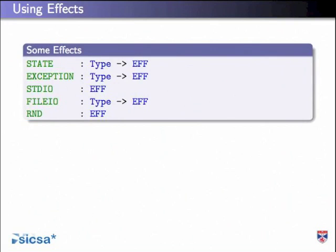Here are some example effects - the kind of things you might commonly see. State is an effect parameterized over the type of thing you're carrying. Exceptions are effects parameterized over the exception type. Input and output is an effect - this standard IO effect gives you writing and reading characters. We might be able to separate different kinds of IO, which is awkward in Haskell - you might want to say you're only allowed to do console IO, not network or CGI effects. File IO is another kind of effect, where this type says what the file is open for - you can't read from a file that's open for writing.